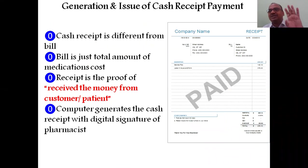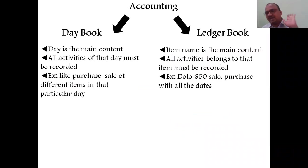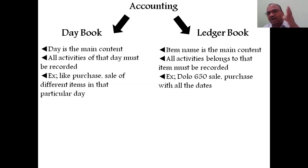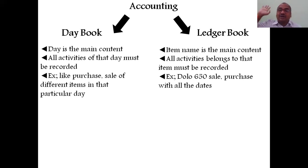A bill and a receipt are different. A receipt is proof of the money received from the customer — it means the amount has been paid. A bill is just the total cost. In accounting, there are two main books: the day book and the ledger book. The day book records what sales and purchases happened on a particular day — the input and output of drugs for that specific day.